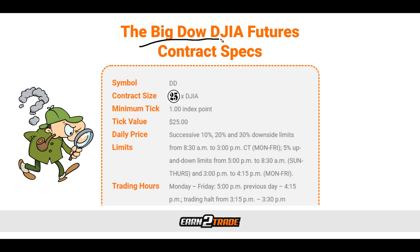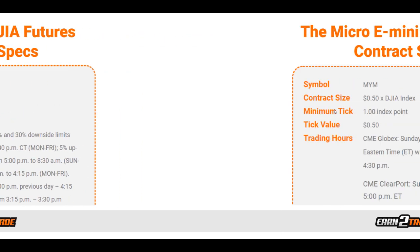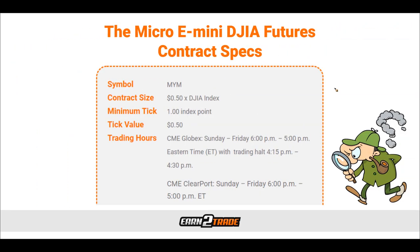Next comes the Big Dow, with a contract size of $25 times the Dow Jones Industrial Average — that means $25 a point. Huge moves here. This contract offers the highest leverage with that $25 multiplier, and if you want it big, the Big Dow, ticker DD, is the one you want. Last but certainly not least, and definitely the most recent addition — in May of 2019, the CME launched the Micro E-mini, which is a very nice way for people with a smaller amount of capital to take advantage of trading the DJIA. The contract size is only $0.50 times the Dow Jones Industrial Average, with a tick value of $0.50, making it much cheaper to get involved. Ticker symbol is MYM.